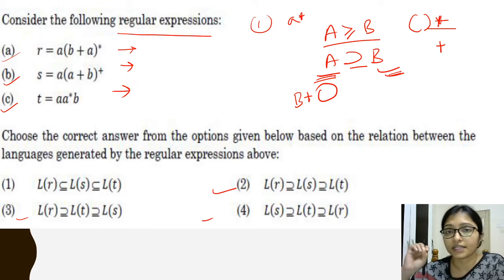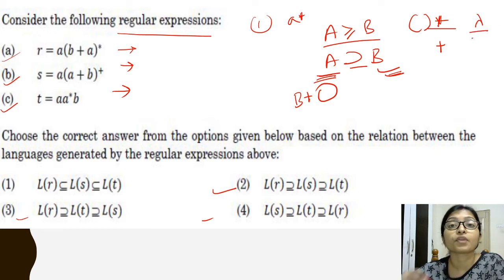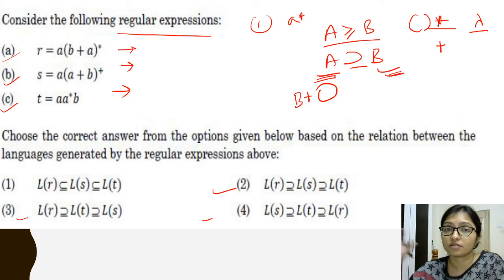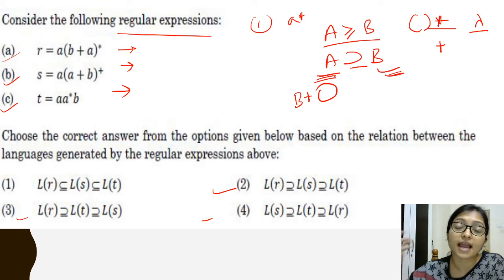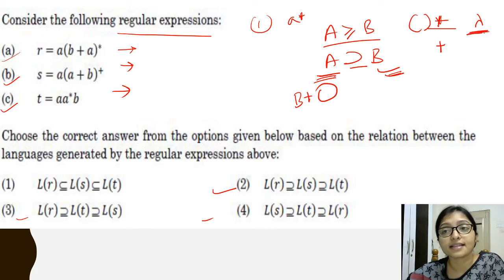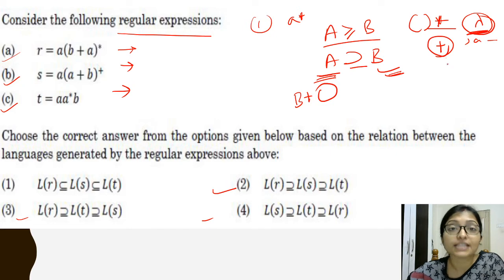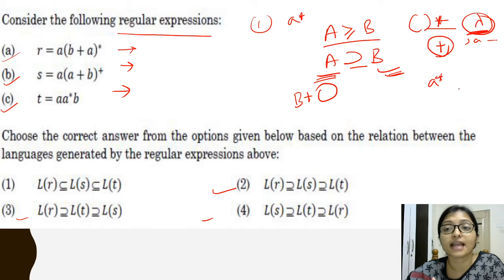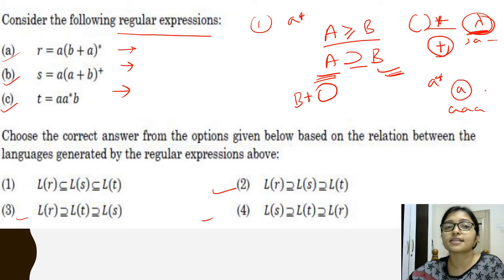You need to understand what star and plus mean. Star means any combination of the alphabet including null — including lambda. Lambda means there can be no occurrence at all, so A-star includes lambda and any combination of A. Plus means at least one occurrence must be there. So A-plus means at least one A, and after that there can be multiple A's.